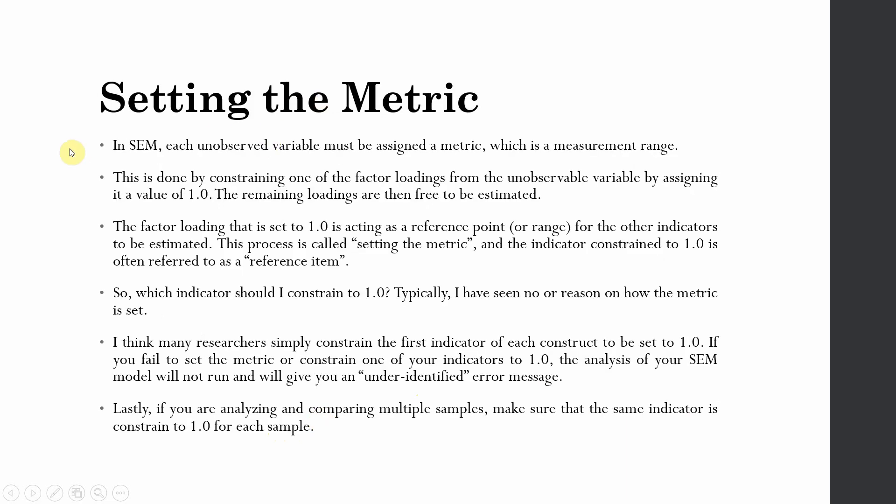Now what about setting the metric? In SEM, each unobserved variable must be assigned a metric, which is a measurement range. This is done by constraining one of the factor loadings from the unobservable variable by assigning it a value of 1. This is what we refer to as a parameter. The remaining loadings are free to be estimated.